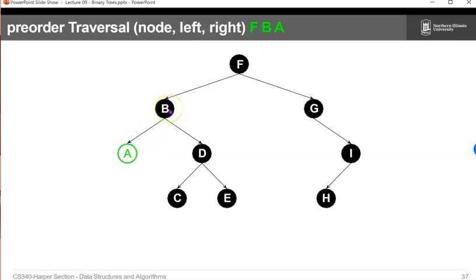Then we'll pop up, print out D, because it's node, left, now right. Then we'll print out the D, and then we'll do, because that's node, and now we're going to go left and right, C and E.